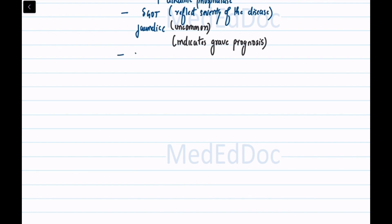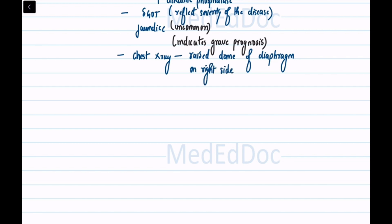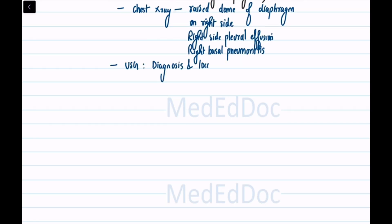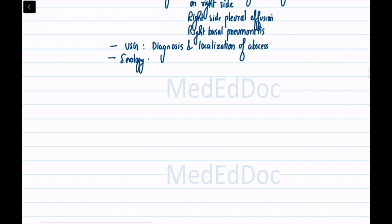Chest radiograph typically shows a raised dome of the diaphragm on the right side, along with right-sided pleural effusion and right basal pneumonitis. Ultrasound scanning is useful for diagnosis and localization of the abscess. Serologic tests (amoebic serology) are positive in over 90% of patients.